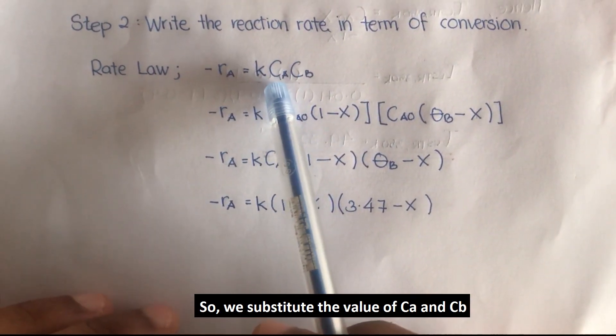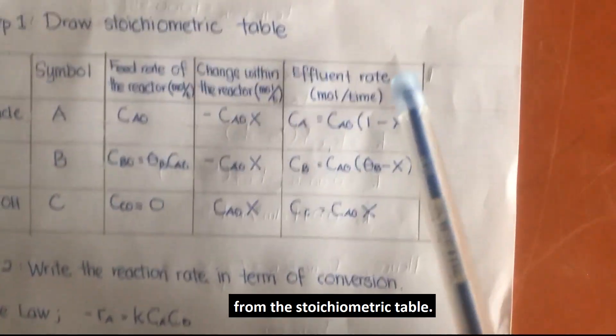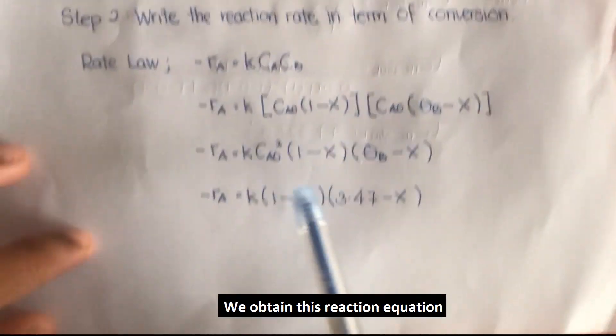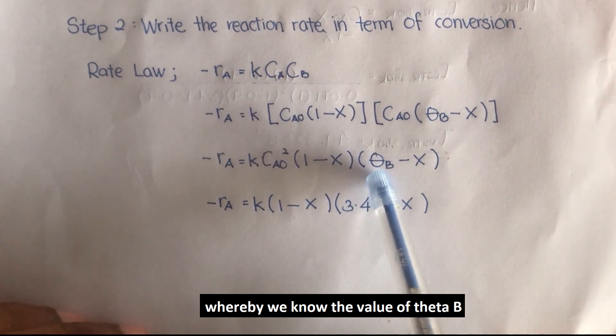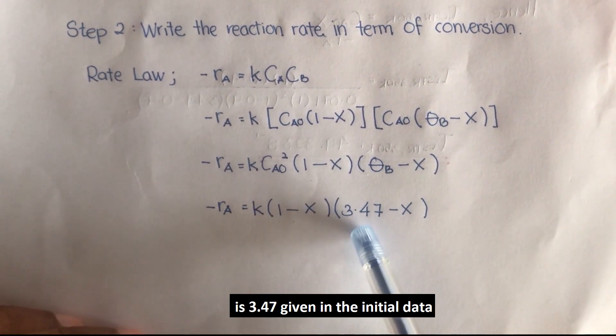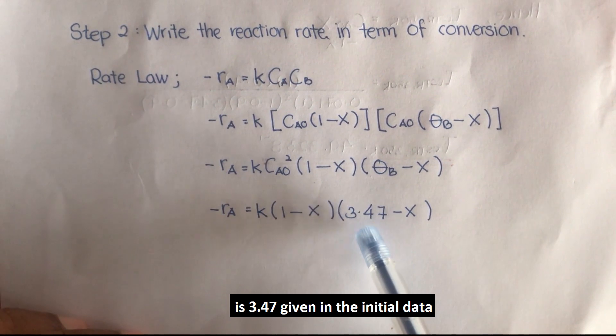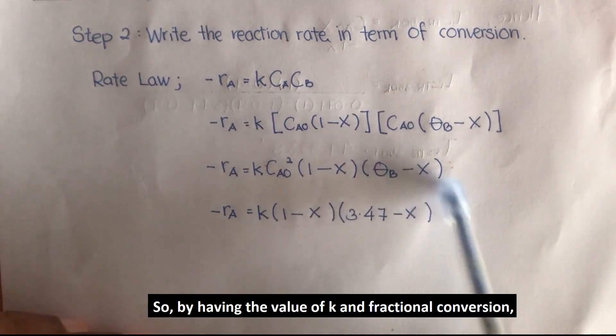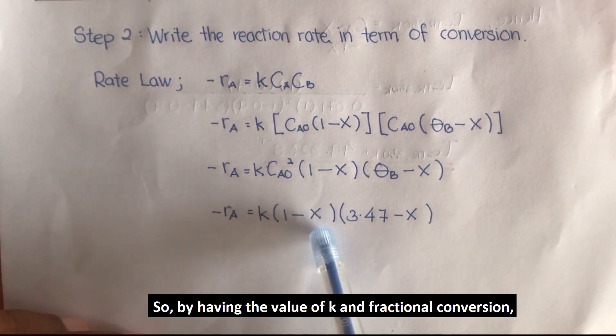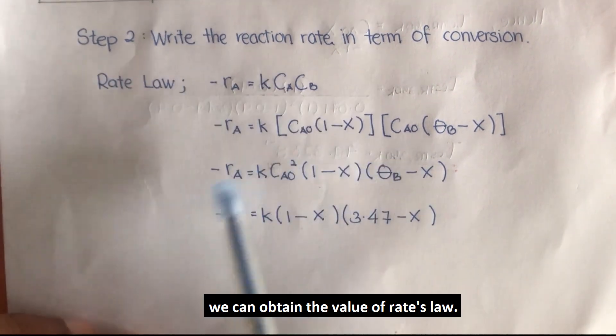We substitute the value of Ca and Cb from the stoichiometric table and obtain this reaction equation. We know the value of theta B is 3.47 given in the initial data. By having the value of K and fractional conversion, we can obtain the value of rate rA.